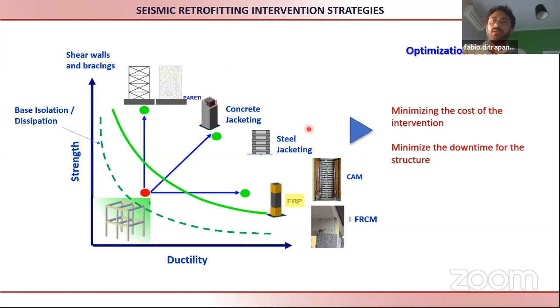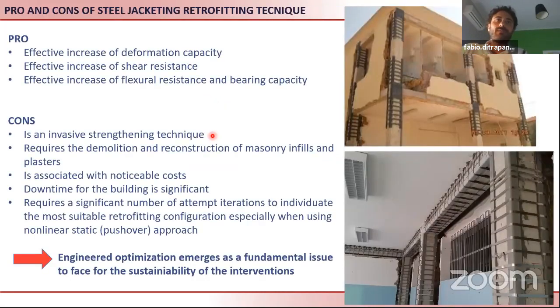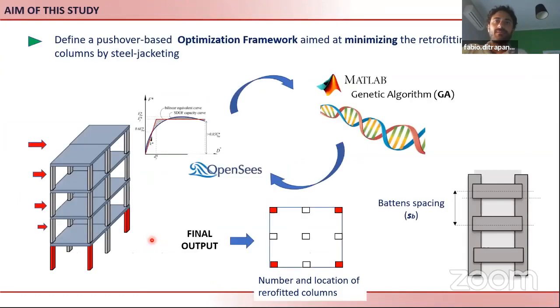I will show an application on steel jacketing. Probably this is not exactly the theme of our conference, but I would like that you see this as an application that we can move eventually with other retrofitting systems and to other typologies of structures. What are the problems of steel jacketing? These are very invasive techniques, so we want to reduce as much as we can the amount of retrofitted elements and reduce the downtime for the building. Because of this, engineering optimization is fundamental in this case.